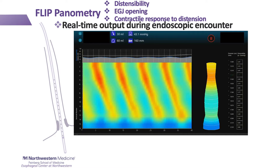Our FLIP planometry technique was adapted into the real-time FLIP display that allows assessment of esophageal distensibility and esophageal motility in response to distension at the time of endoscopy. Here's an example of this real-time display in an asymptomatic research volunteer.